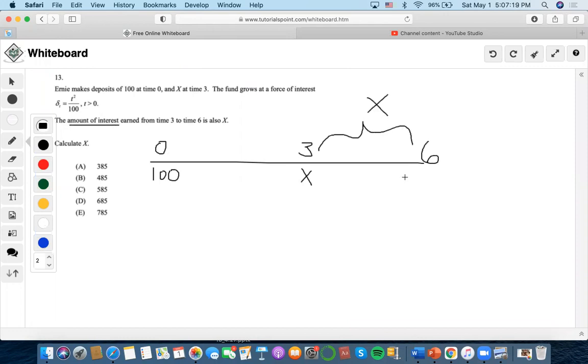Okay, so when we're talking about the amount of interest, we're talking about the value at 6, accumulation at 6, minus the value at time 3 to get x amount of interest.